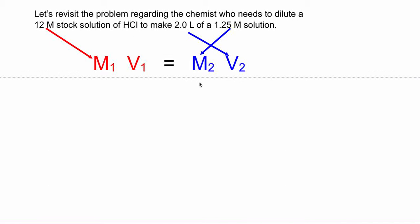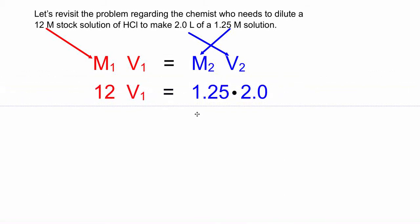We read our problem and start pulling out the information. We plug in our stock molarity of 12 molar and our new molarity of 1.25. We don't know the volume of the strong solution we're going to dilute — we're going to pull out a little bit of that 12 molar solution and add water to it. We do know our final volume is 2 liters, so we put that in the V2 spot.